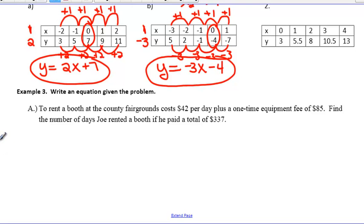Now we're going to look at writing an equation given a word problem. We're still going to want to use the form of y equals mx plus b when creating this problem. I'm going to go ahead and read it first. So it says to rent a booth at the county fairgrounds, it costs $42 per day plus a one-time equipment fee of $85. Find the number of days Joe rented a booth if he paid a total of $337. So we're looking to find the amount of days that Joe rented this booth. So we're going to let our x equal days.